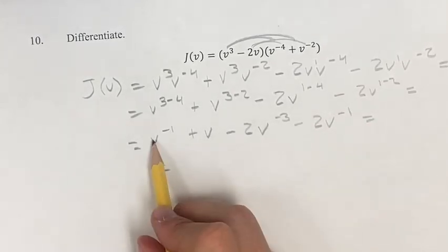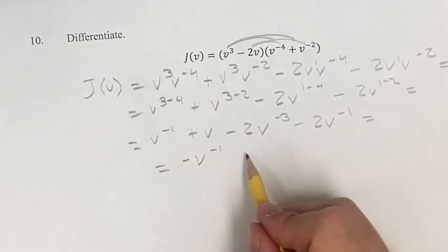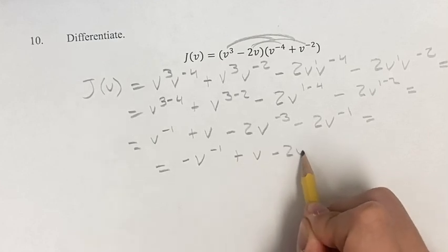This is equal to v to the negative 1 minus 2v to the negative 1, and combining like terms, plus v minus 2v to the negative 3.